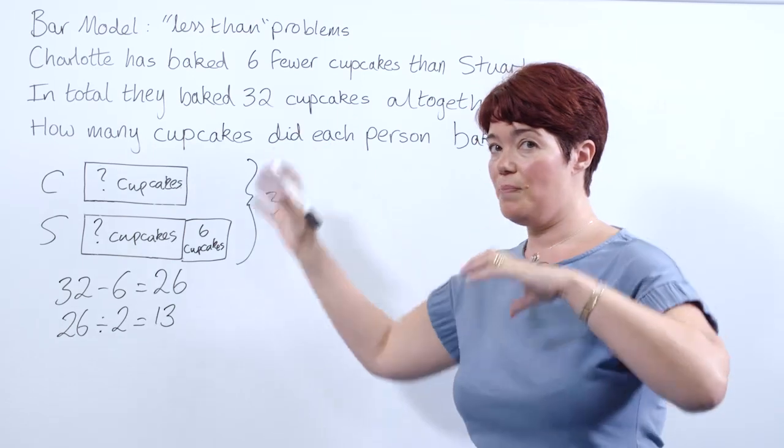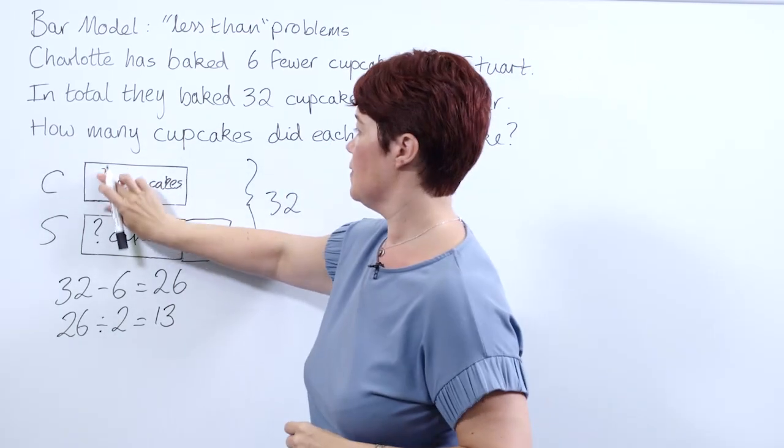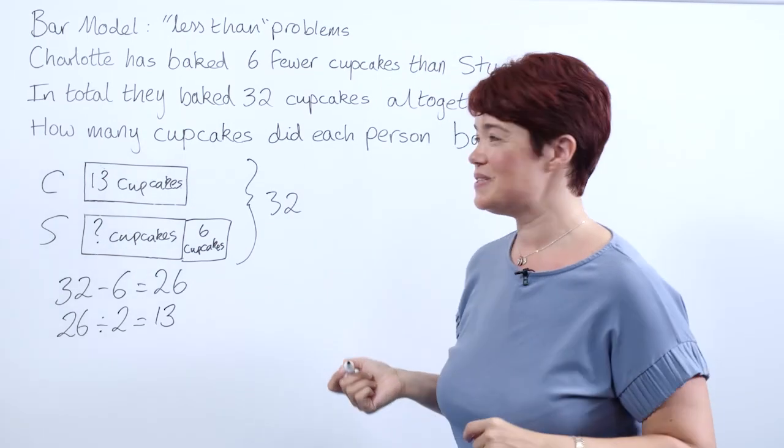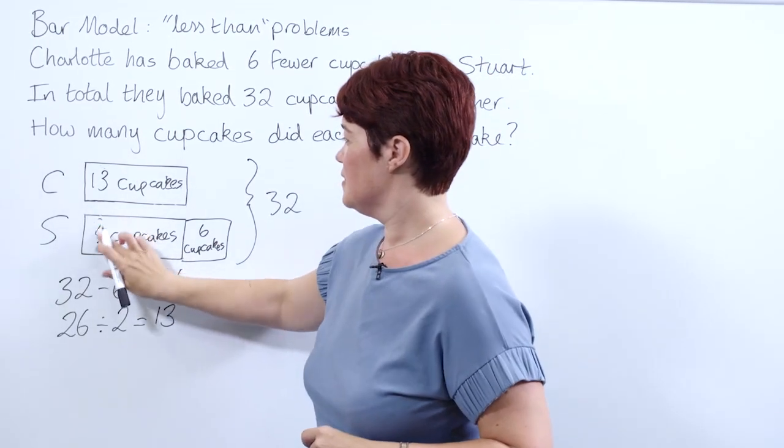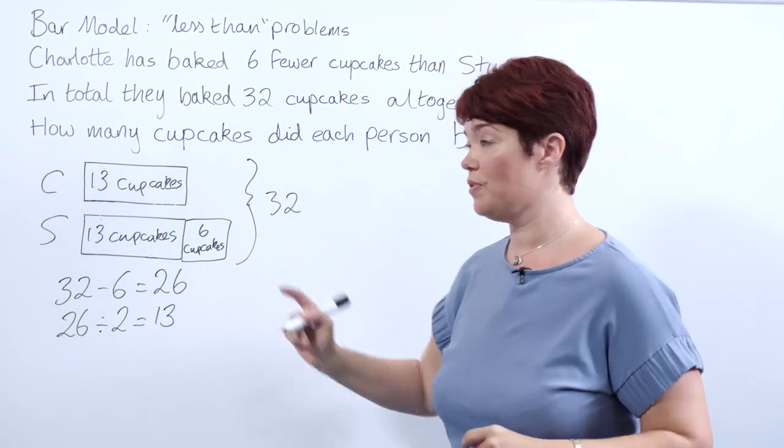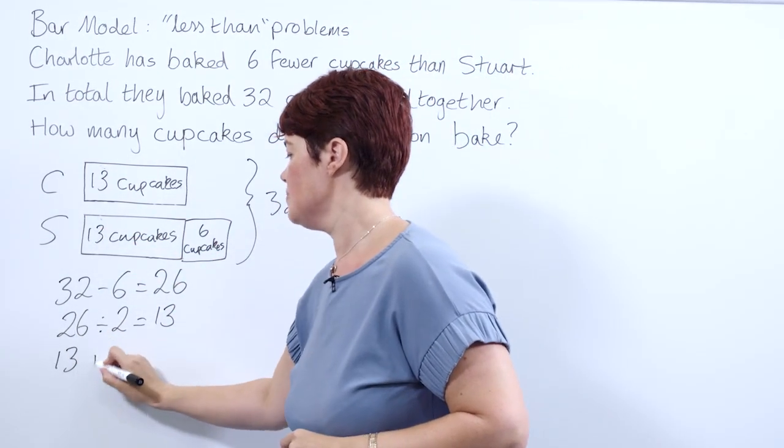We can go back to our model and replace our question mark. So Charlotte baked 13 cupcakes, a baker's dozen, and Stuart baked 13 cupcakes plus the six more that he had, so 13 plus 6 is 19 cupcakes.